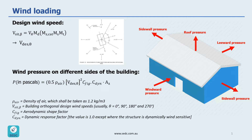And then we have A_z, which is the tributary area for the wind. What we need to do is calculate this wind pressure on different sides of the building. For example, if wind is applied in a given direction, we have windward pressure on the front side, leeward pressure on the rear side, side wall pressures, and finally roof pressure — each with their own parameters and factors to calculate.